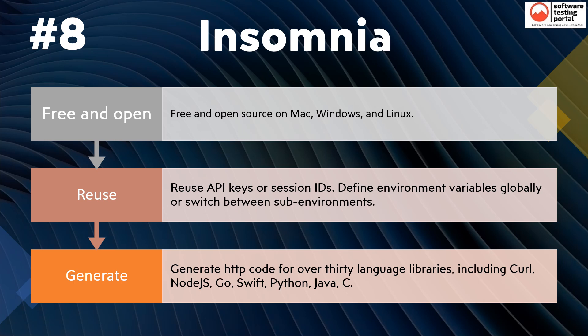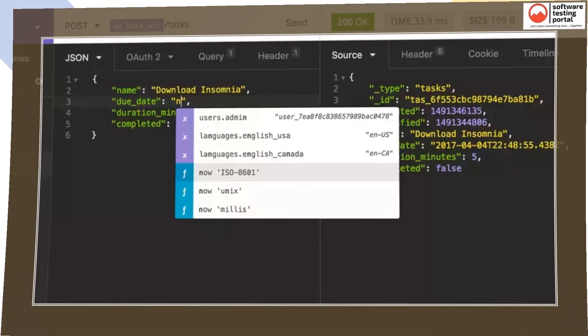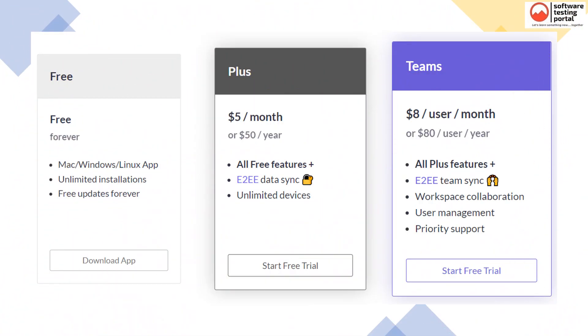The eighth tool is Insomnia. This is free and open source on Mac, Windows, and Linux. It reuses API keys or session IDs, and generates HTTP code for over 30 language libraries including curl, Node.js, Go, Swift, Python, Java, and C. A free version is available. This is the section where you can write the JSON request, and this is the pricing plan of Insomnia.